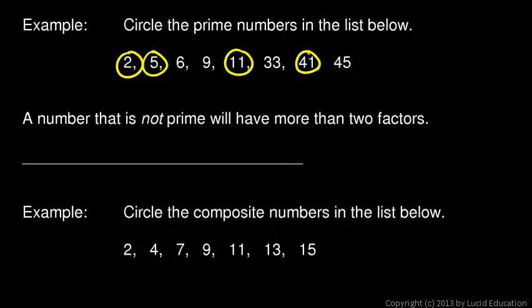The numbers not circled in the list. A number that's not prime will have more than two factors, and these are called composite numbers. Write that down. Composite—and that's a good name.